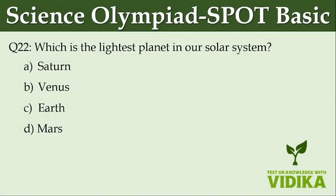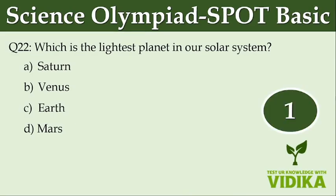Which is the lightest planet in our solar system? Option A: Saturn. Option B: Venus. Option C: Earth. Option D: Mars.